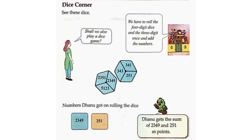Dice Corner. See these dice. Shall we also play a dice game? We have to roll the 4-digit dice and the 3-digit ones and add the numbers.